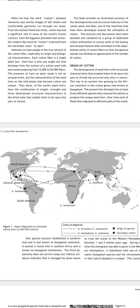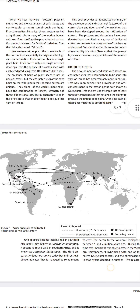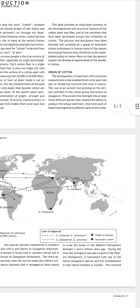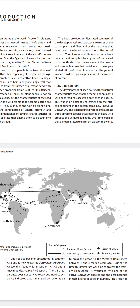Prior to the mid-20th century, the major dispersal of cultivated cotton across the globe involved three key species. One species became established in southern Asia, known as Gossypium arboreum. A second is found in southern Africa, known as Gossypium herbaceum. A third part does not survive today, but indirect evidence indicates it managed by some means to cross the ocean to the western hemisphere between one to two million years ago, where it hybridized with one of the native Gossypium species.